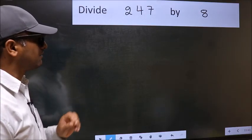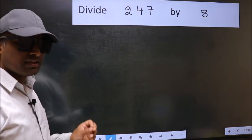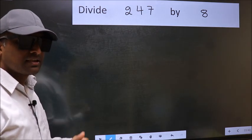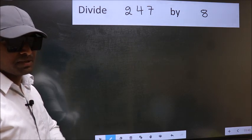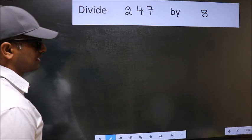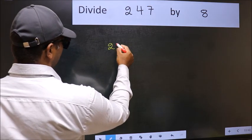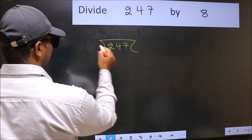Divide 247 by 8. While doing this division, many do this mistake. What is the mistake that they do? I will let you know, but before that we should frame it in this way: 247 and 8 here.